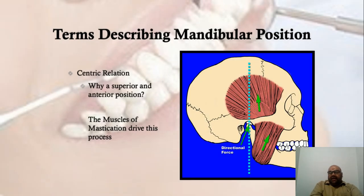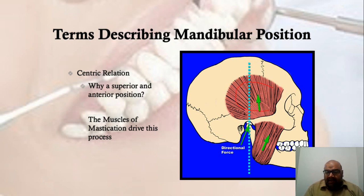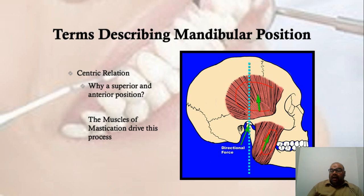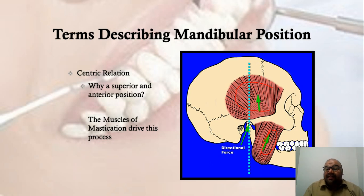Centric relation is the anterior-superior-most position because of the direction and pull of the muscles. The temporalis muscle pulls superiorly while the masseter muscle — one of the most powerful muscles of mastication — pulls anteriorly. The reason the condyle sits in its anterior and superior-most position is because of the arrangement and pull of both the muscles of mastication and the temporomandibular ligaments.